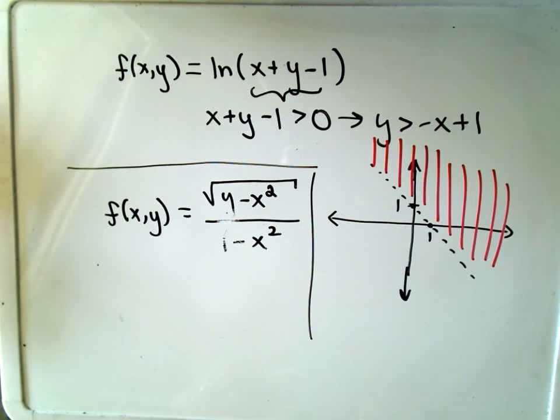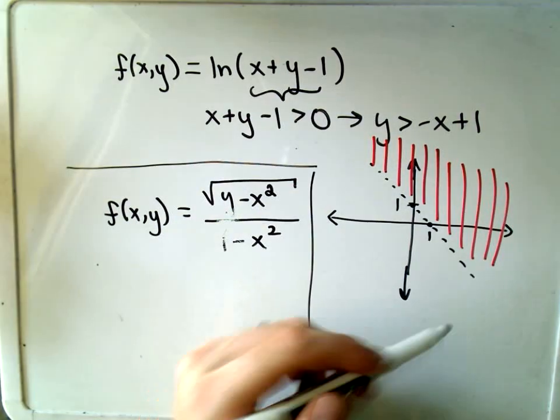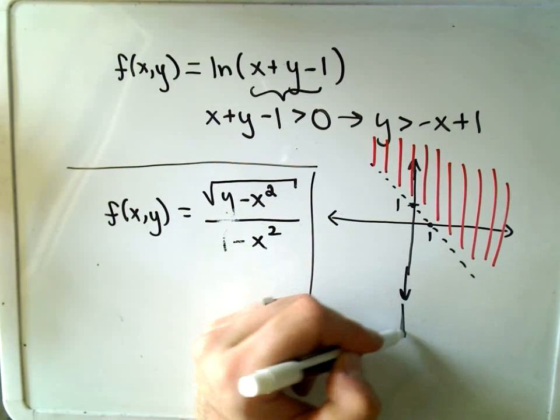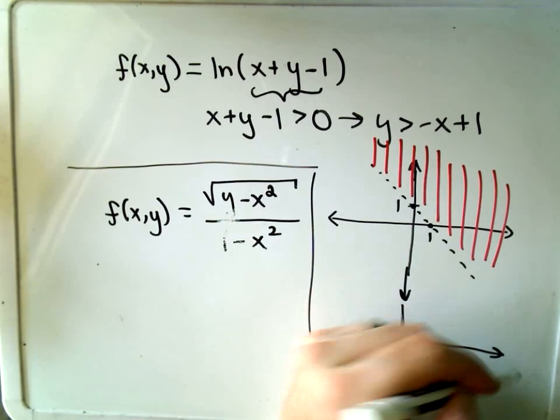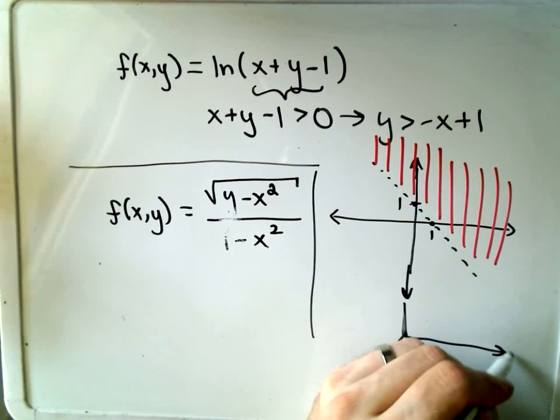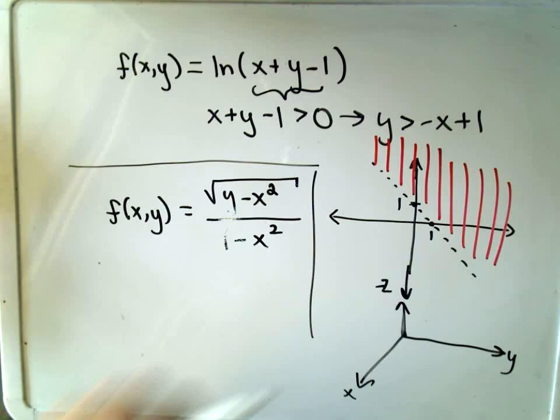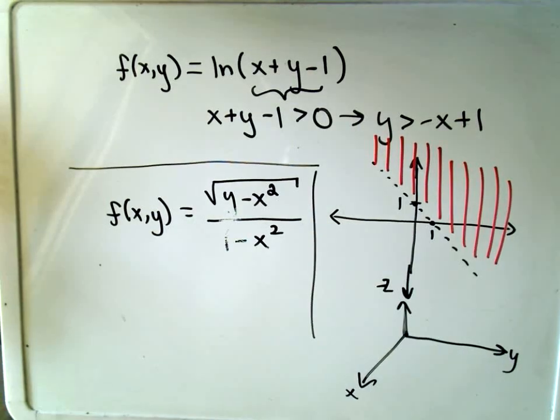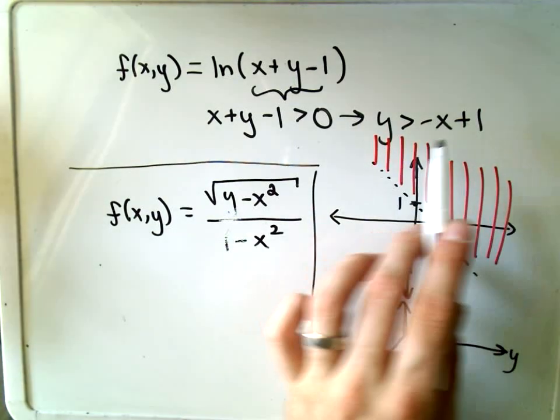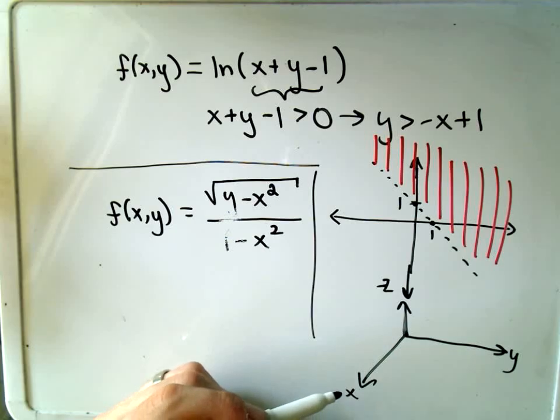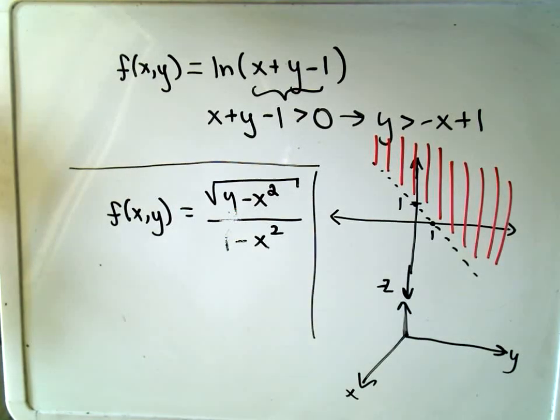So the idea is, if you were to graph this function in three dimensions, this is going to be probably a bad little drawing here, x, y, and z. If you were to think about the line y equals negative x plus 1, what that's going to look like in the plane, it would have a y-intercept of positive 1.